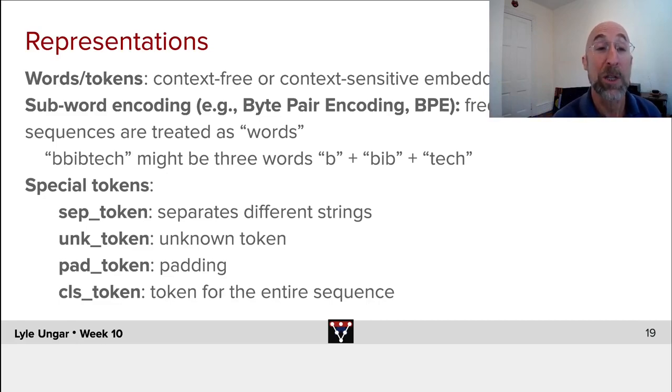An unknown token, if you're not using a subword encoding, you need some way to encode a word like bibtech you've never seen. Replace it with an unknown token. If you're doing padding, truncate, pad, remember? Don't put in zeros, that's a zero. Put in a special token for padding, a pad token.